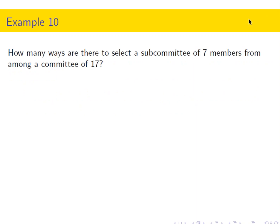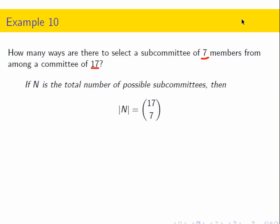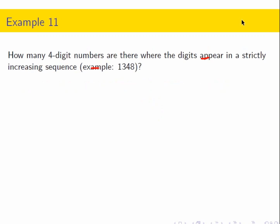A committee of 17 members is selecting a subcommittee of seven. How many possible subcommittees are there? This is 17 choose 7. There's no priority like chairperson or vice chair — just seven subcommittee members. Since there's no order, this is combinations, so we have 17 choose 7 possibilities.